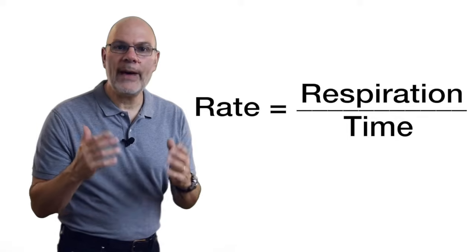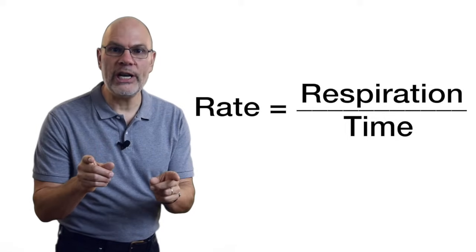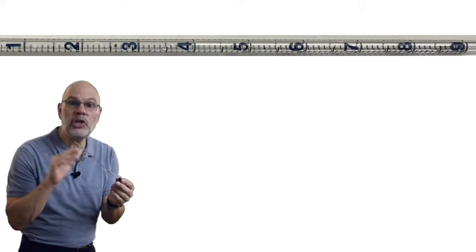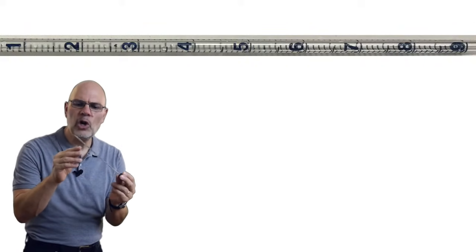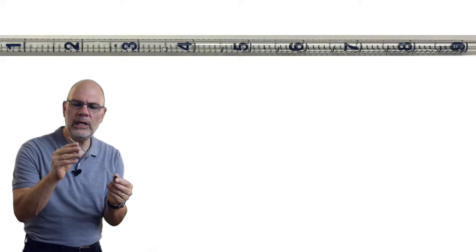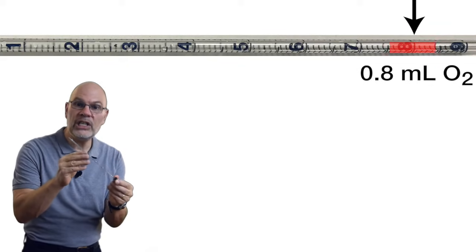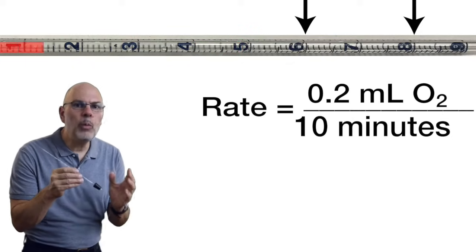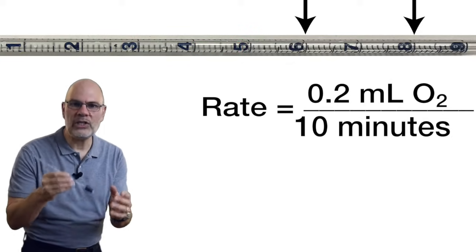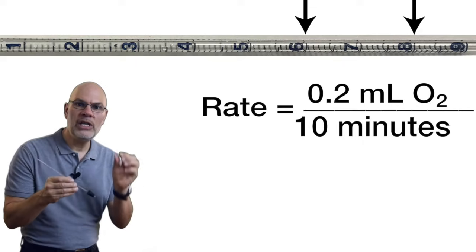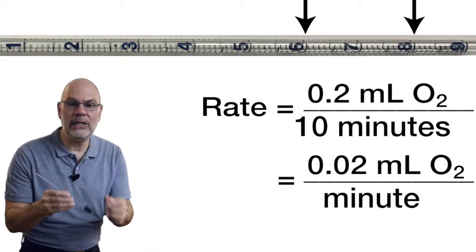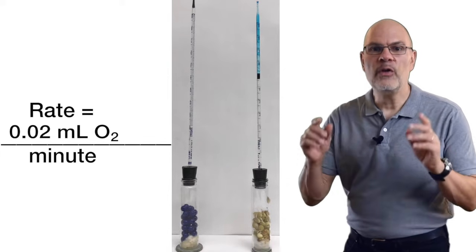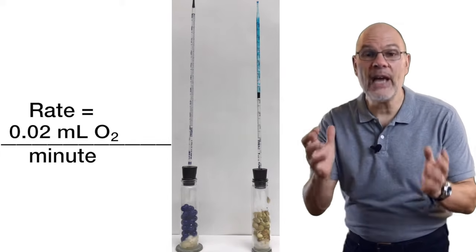Let's finish by talking about how you determine the rate of respiration. The entire volume of this pipette is one milliliter. So, if as we're doing our observations, we see the food coloring move from here, which is 0.8, to here, which is 0.6 in 10 minutes, then that's a difference of 0.2 milliliters in 10 minutes. And you can reduce that to 0.02 milliliters per minute. That's our rate of oxygen consumption for this many lentils at room temperature.